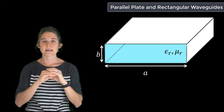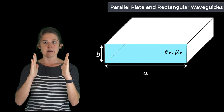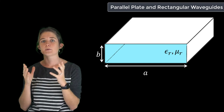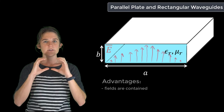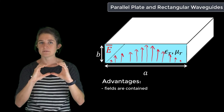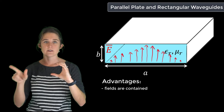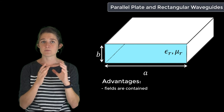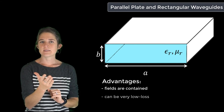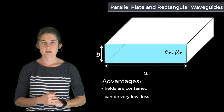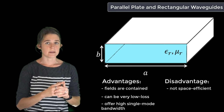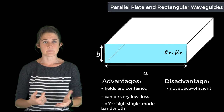A rectangular waveguide is a rectangular conductive tube of width a and height b, filled with a dielectric of relative permittivity epsilon r and relative permeability mu r. The fields are entirely contained, as in the case of the coax, so there is no possibility of interference from external structures or signals. Waveguides are commonly empty, which bypasses dielectric loss and allows extremely low loss performance. They can also offer very high single mode bandwidth, however they are often quite bulky and inflexible, so space can become an issue.